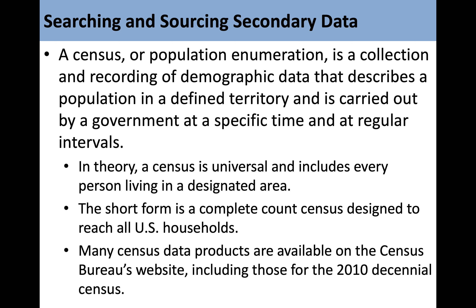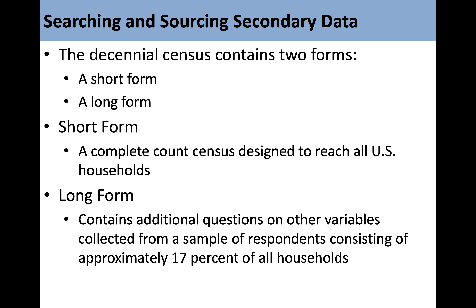A census or population enumeration is a collection and recording of demographic data that describes a population in a defined territory, carried out by a government at a specific time and at regular intervals. In theory, a census is universal and includes every person living in a designated area. The decennial census contains two forms: a short form, which is a complete count census designed to reach all U.S. households, and a long form, which contains additional questions collected from a sample of approximately 17% of all households.